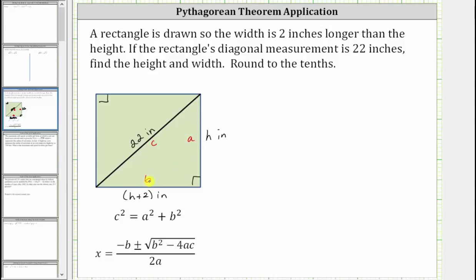And now applying the Pythagorean theorem, we would have c squared or 22 squared equals a squared, which is equal to h squared, plus b squared, which is the quantity h plus two squared.